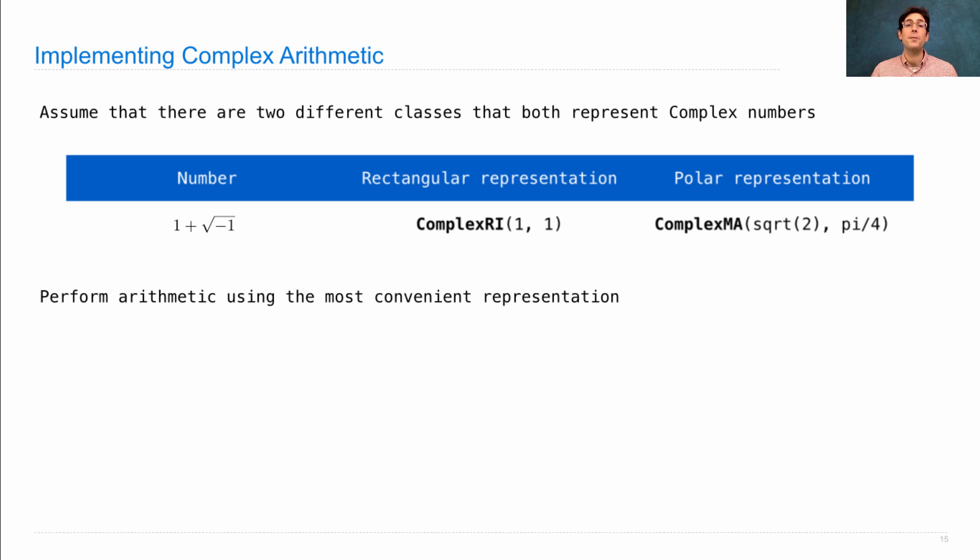Now, the reason we have two is that when we want to perform arithmetic, such as adding or multiplying together complex numbers, one of these is more convenient than the other.